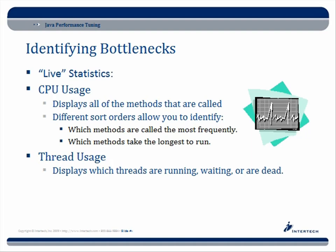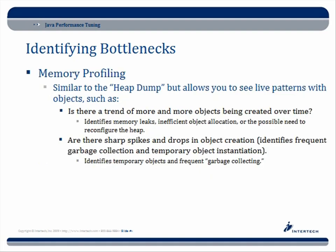In addition to CPU usage, there's thread usage — you can see live at a given moment which threads are awake, running, sleeping, blocked, or in a deadlocked state. There's also memory profiling. Similar to the heap dump, but instead of just a single moment in time, it shows live patterns with objects. Is there a trend of more and more objects being created over time? If so, this can identify memory leaks, inefficient object allocation, or the need to reconfigure the heap. Sharp spikes and drops in object creation identify frequent garbage collection and temporary object instantiation — you may be creating temporary objects unnecessarily, causing the JVM's garbage collector to run too frequently and negatively impacting performance.